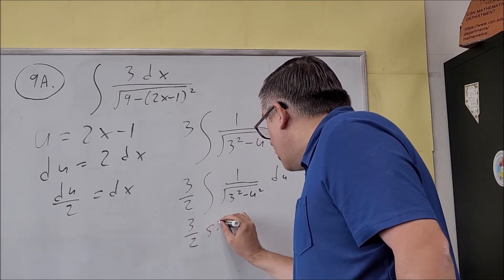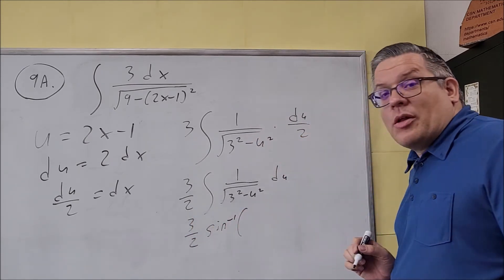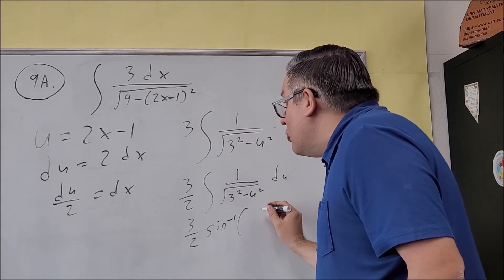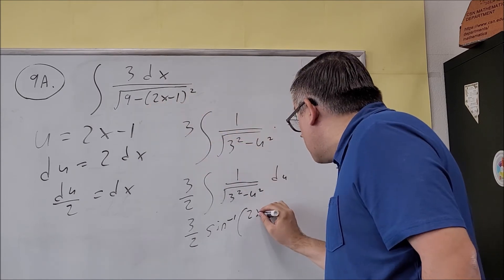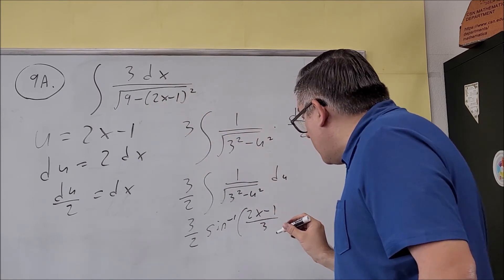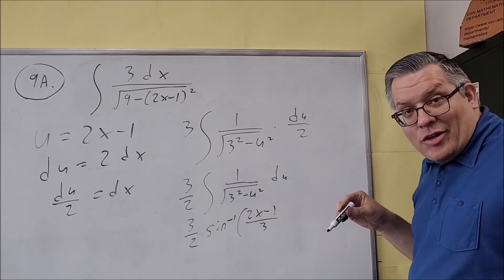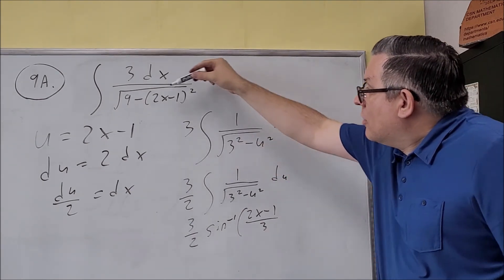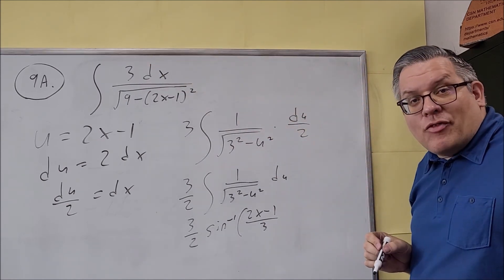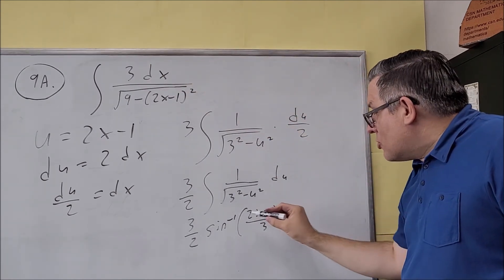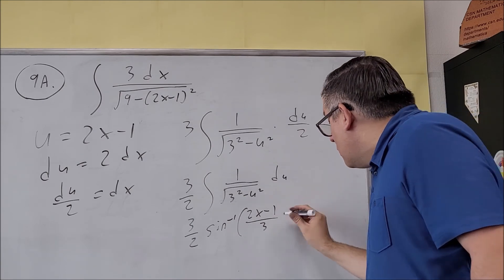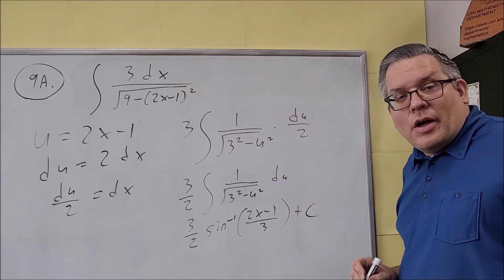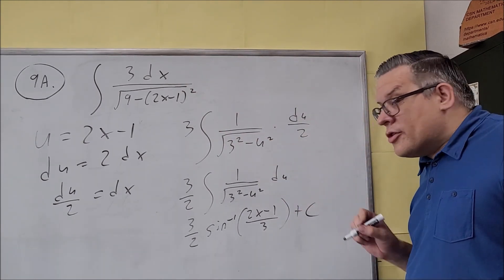We're going to do 3 halves. We're going to do inverse sine. That's going to be u over a is the formula from the formula sheet there. So we're going to do the u with this one here, 2x minus 1. This is the 3, that's your a value on that. So that's why we have to write this as a square for each of these. So that way you know what that a value has to be inside. So inverse sine, 2x minus 1 over 3 plus, don't forget again, the plus c you need on that because it's another indefinite integral, always requires you to have the plus c.